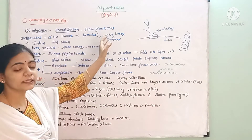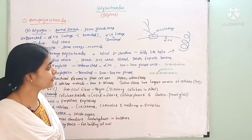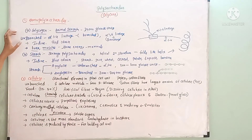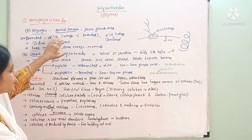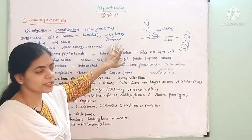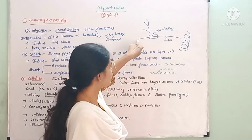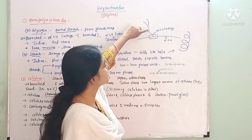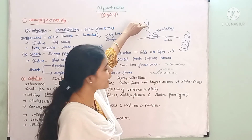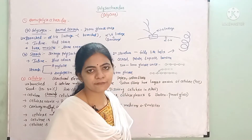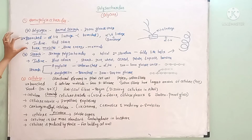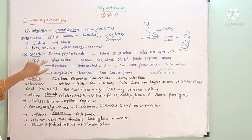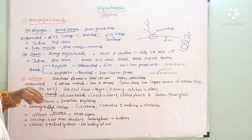One molecule of glycogen consists of nearly 30,000 glucose units. It has both unbranched and branched formulas. In unbranched regions, it uses alpha 1,4 linkage; at branching points, it uses alpha 1,6 linkage. When glycogen is tested with iodine, it gives a red color, while starch normally gives a blue color.